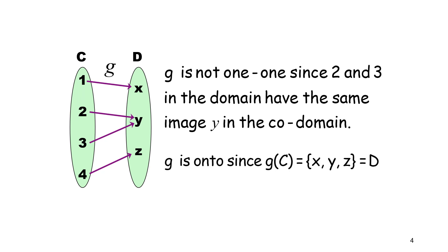But it is an onto function since g of C is equal to x, y, z, which is equal to D.